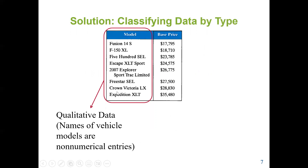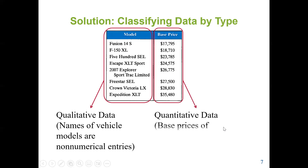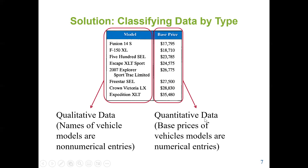The models are qualitative data because they are names of vehicle models — they are not numerical, they are non-numerical entries. The base price will be quantitative data because base prices of vehicle models are numerical entries, and we can perform arithmetic operations on them.